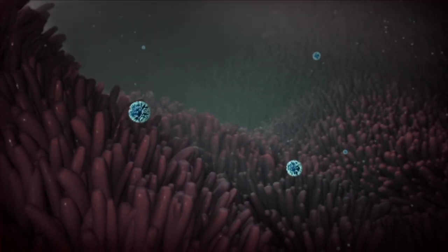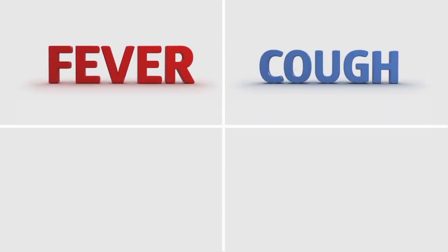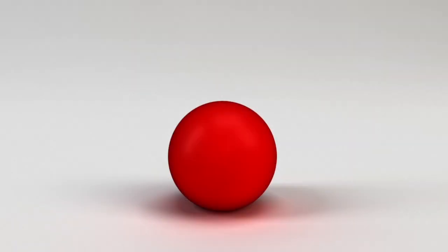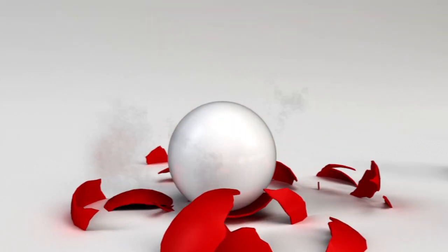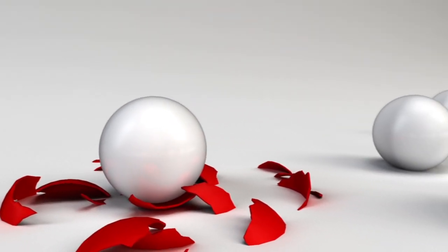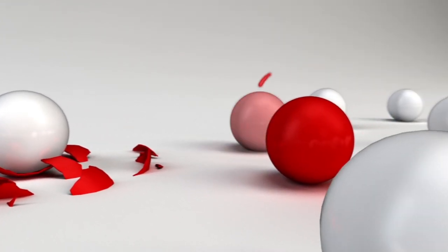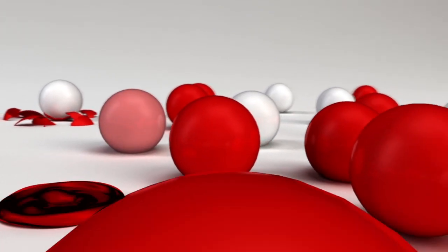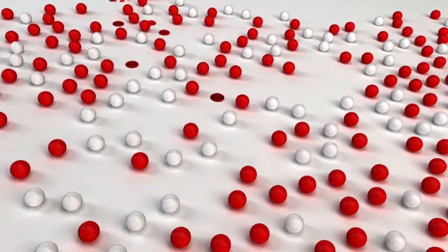As this infection takes over your cells and your immune system responds, you experience symptoms like fever, cough, aches, and chills. Now, maybe you're able to fight off the flu just fine, but as a carrier you risk infecting people around you, such as those who can't fight the flu. As the disease spreads, those who are vulnerable risk developing severe or even fatal complications. In fact, every year, a few thousand Canadians die from flu-related complications.